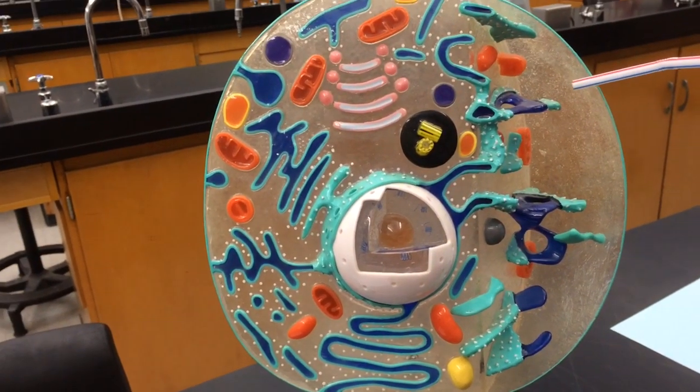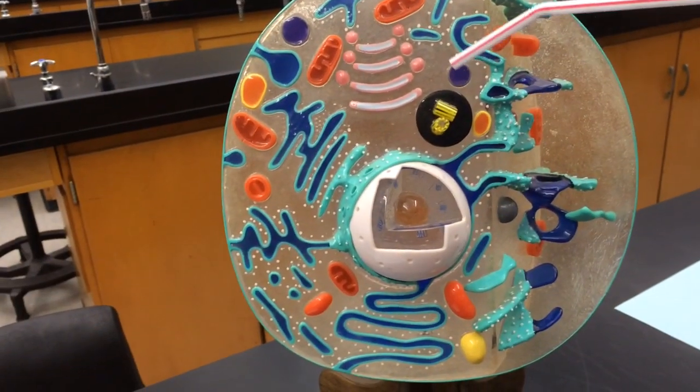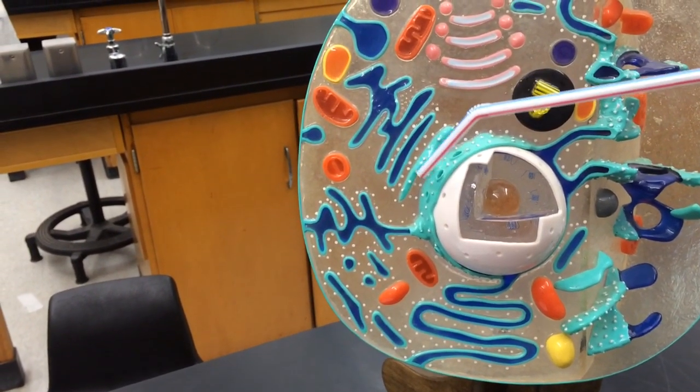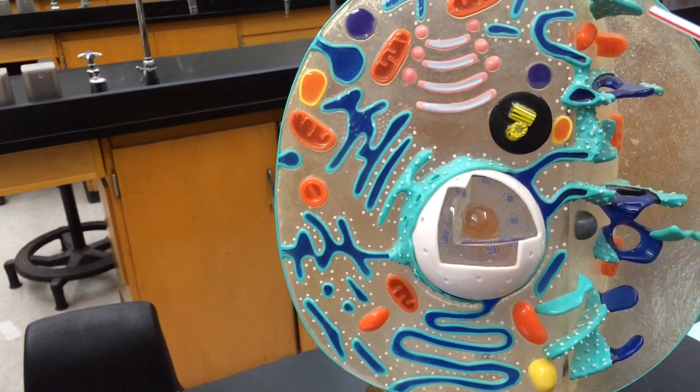Now, if we move internally into the cell, we notice that there are a lot of tiny little white dots throughout. Those tiny little white dots are actually ribosomes.